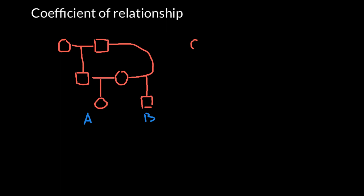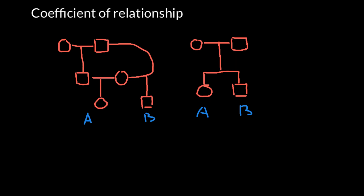This time we have another couple, and this couple has two children. The sex of the children doesn't matter — it can be two boys, two girls, or a boy and a girl. What is the coefficient of relationship of individual A and B? We can say that both children have the same parents, so 50% of the genome they got from the mother's side and another 50% from the father's side, and this is true for each child.